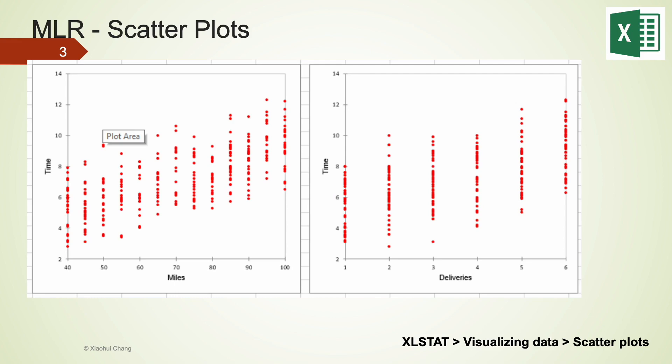The very first thing we need to do is to create the scatter plots for each x and y. I've done that using XLSTAT. The commands in XLSTAT are given at the bottom of this screen. On the left, we are able to see a linear relationship between miles and time, as we have seen in the simple linear regression. On the right, we see deliveries is also linearly related to time.